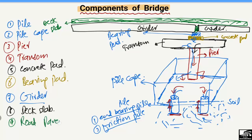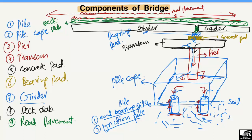The last part of the bridge is the road pavement. On top of the bridge we place bitumen asphalt, which is known as the road pavement, and traffic moves in both directions on it. The road pavement transfers the load to the deck slab, the deck slab to the girders, the girders through the bearing plates to the concrete plates, the concrete plates to the transom, the transom to the pier, then to the pile cap, and finally to the pile, which takes the load either by friction or by end bearing.